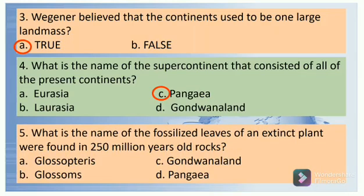Question 5: What is the name of the fossilized leaves of an extinct plant that were found in 250-million-year-old rocks? If your answer is letter A, that is correct.